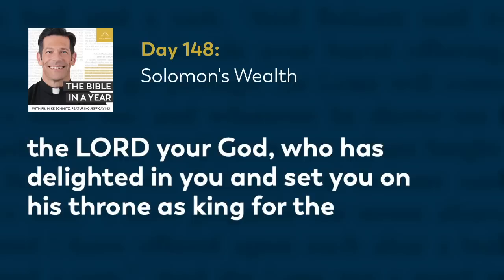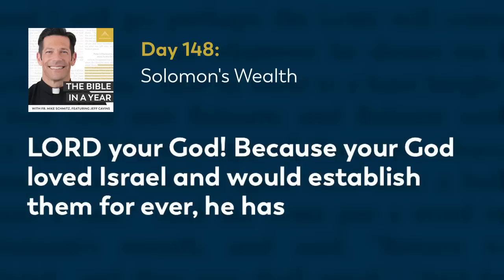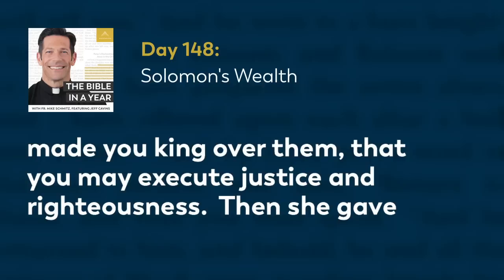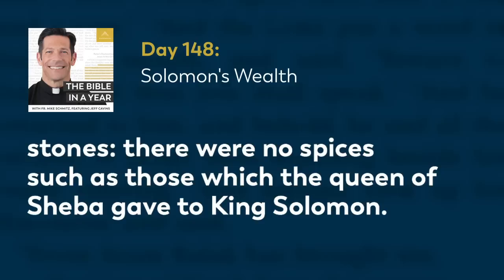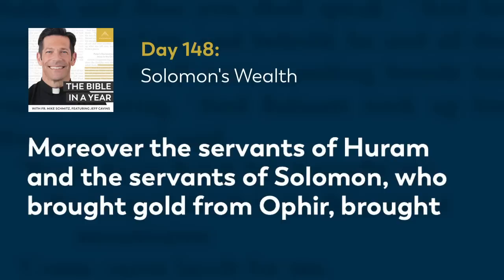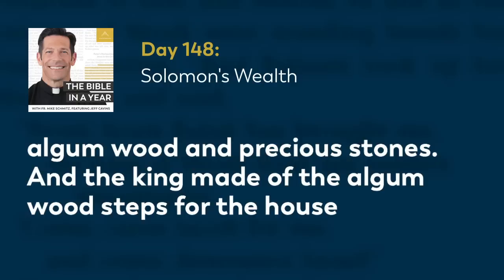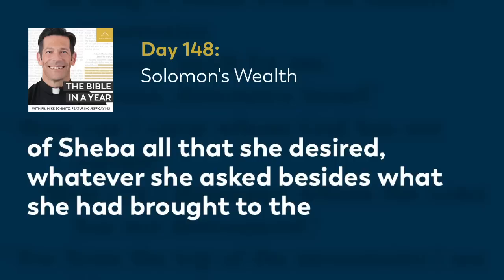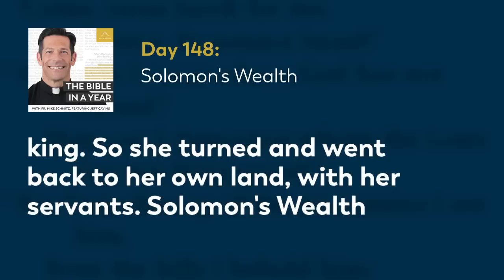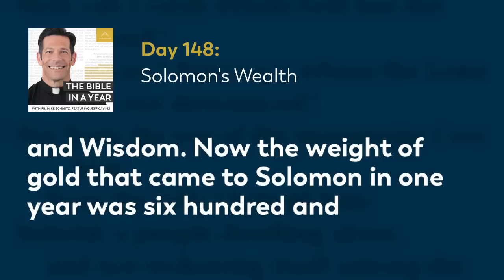'Happy are your wives. Happy are these, your servants, who continually stand before you and hear your wisdom. Blessed be the Lord your God, who has delighted in you and set you on his throne as king for the Lord your God. Because your God loved Israel and would establish them forever, he has made you king over them, that you may execute justice and righteousness.' Then she gave the king a hundred and twenty talents of gold and a very great quantity of spices and precious stones. There were no spices such as those which the queen of Sheba gave to King Solomon. Moreover, the servants of Hiram and the servants of Solomon, who brought gold from Ophir, brought algam wood and precious stones. The king made of the algam wood steps for the house of the Lord and for the king's house, lyres also and harps for the singers. There never was seen the like of them before in the land of Judah. And King Solomon gave to the queen of Sheba all that she desired, whatever she asked besides what she had brought to the king. So she turned and went back to her own land with her servants.